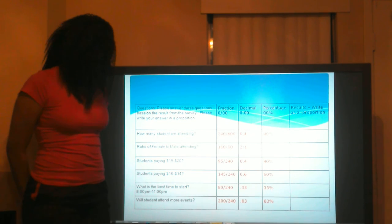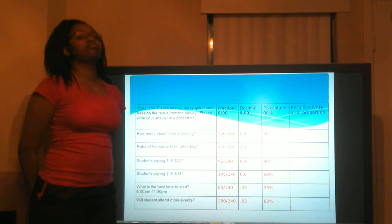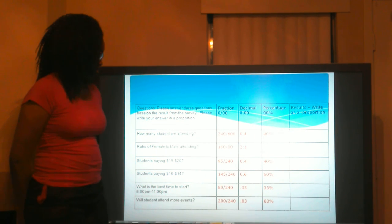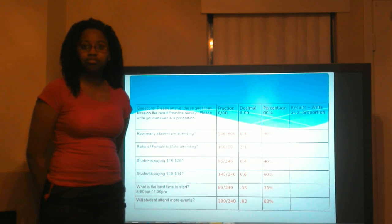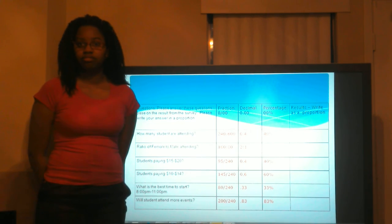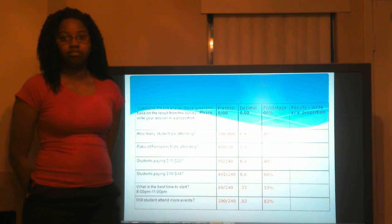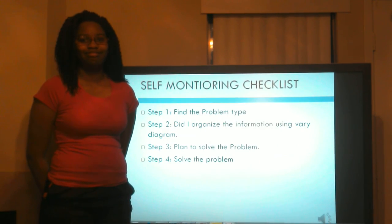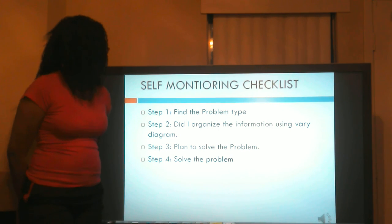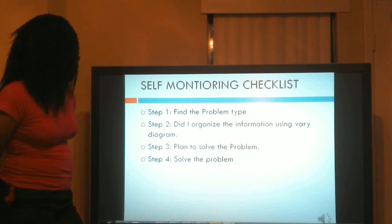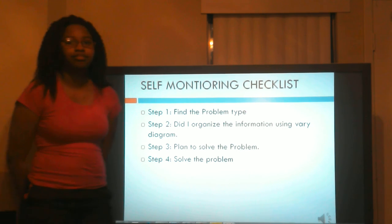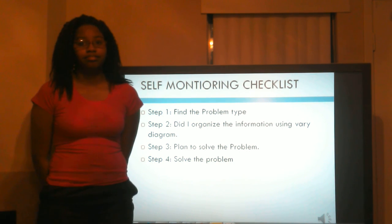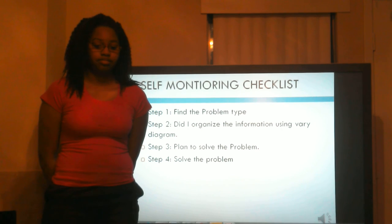The last one — the forecasting. What does 83% mean to you? What would you do based on that number? Add more ideas — add more events. That's great thinking. Now Brianna, I need you to do your checklist: find the problem type, did you organize the information using a diagram, plan to solve the problem, solve the problem. Did you follow all of these steps? Yes. And once again, this is Education by Spencer — see you next time.